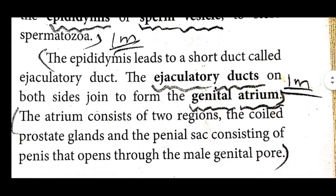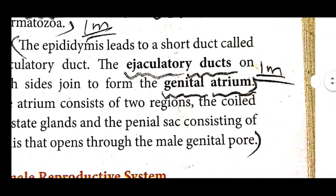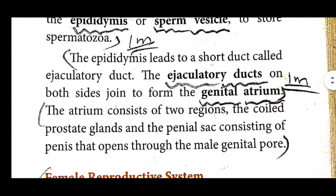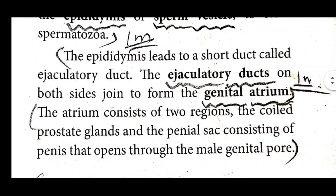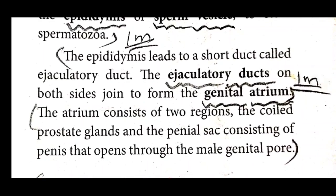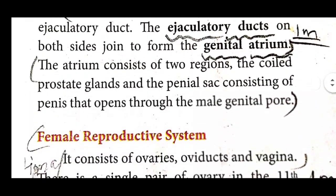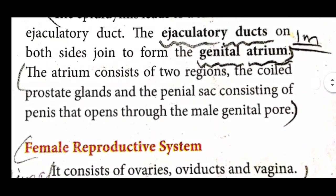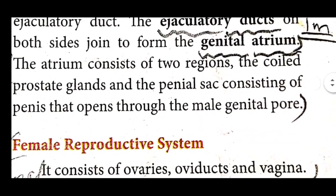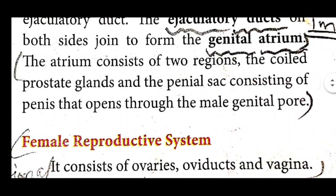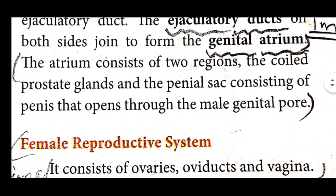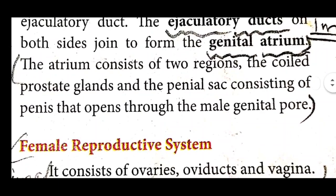The epididymis leads to a short tract called the ejaculatory tract. The ejaculatory tract on both sides joins to form the genital atrium. The atrium consists of two regions: the coiled prostate gland and the penial sac consisting of a penis that opens through the male genital pore.